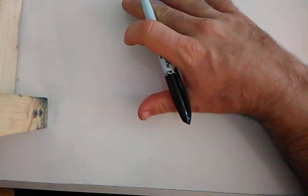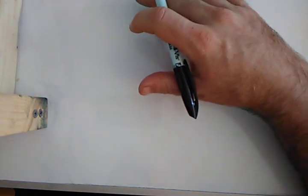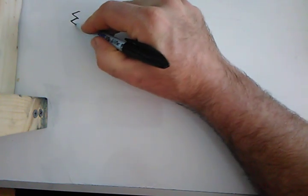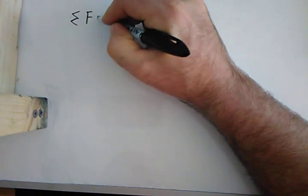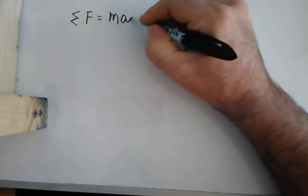So listen, what we got here going on is we looked at examples of Newton's second law. I'm going to write that down for you again. It says that the sum of forces is equivalent to the mass times the acceleration.